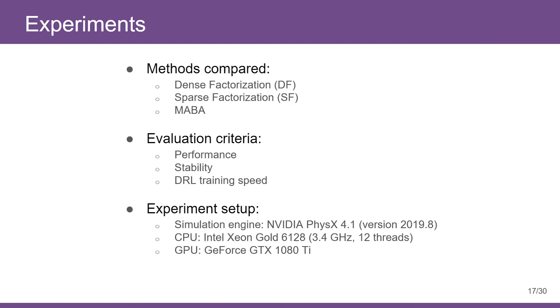Next, we evaluate our algorithm by comparing it with conventional SPD computation methods, including dense factorization and sparse factorization. We denote these two methods by DF and SF respectively for short. We will evaluate different SPD algorithms in terms of simulation performance, stability, and DRL training speed.